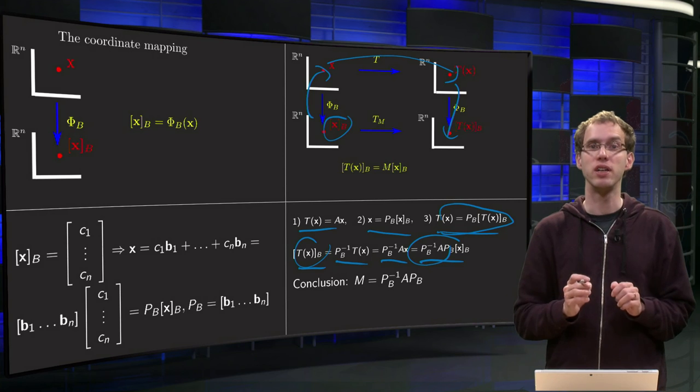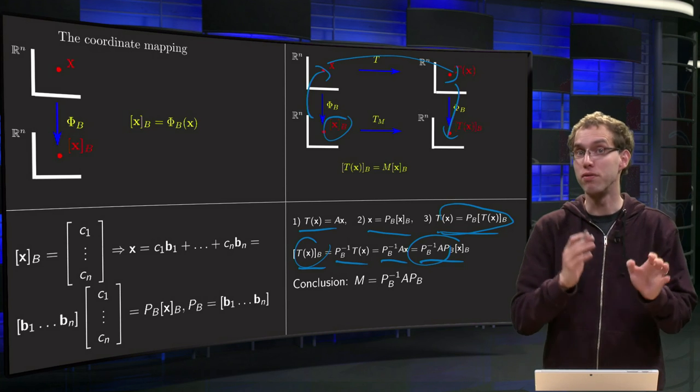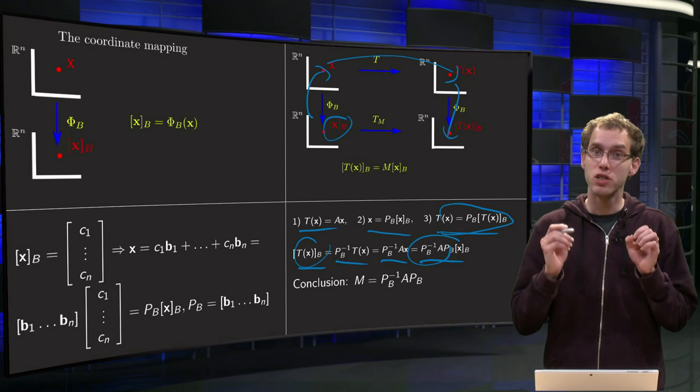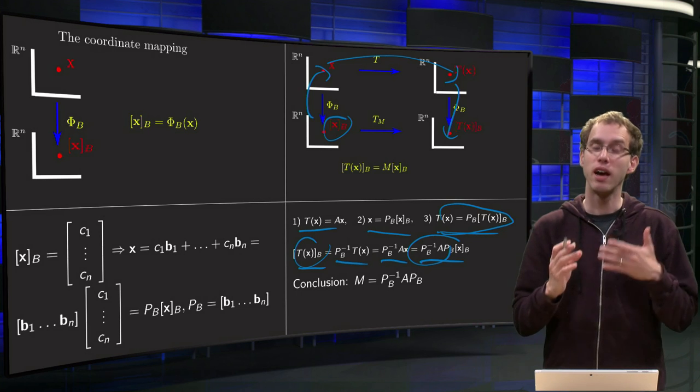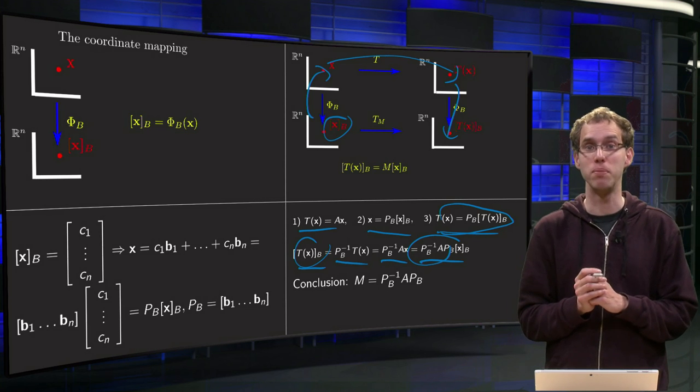So if you draw the picture, you can always memorize where the inverse has to be by just starting at xb and following the arrows to see how you come at T of x in b.